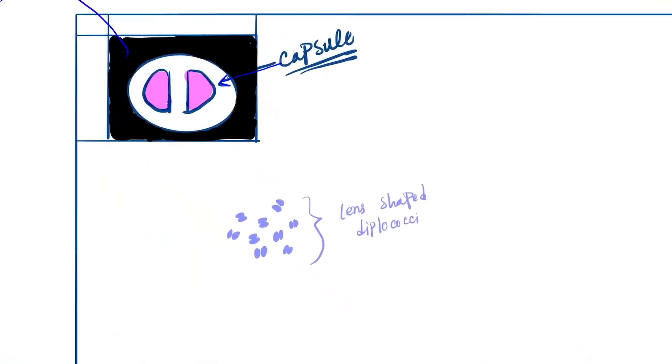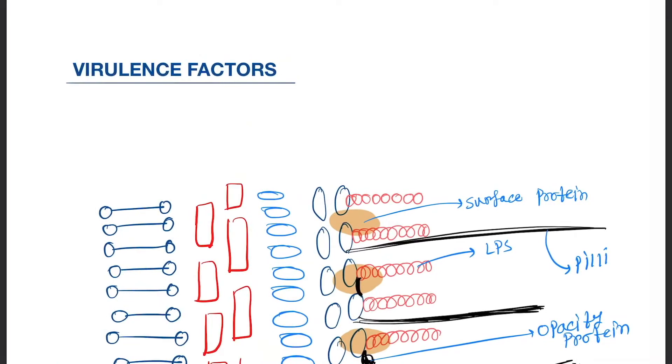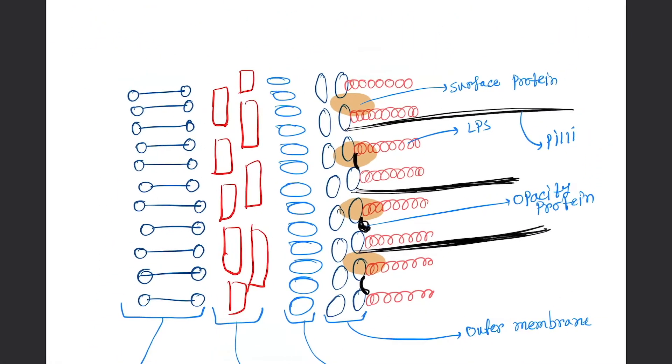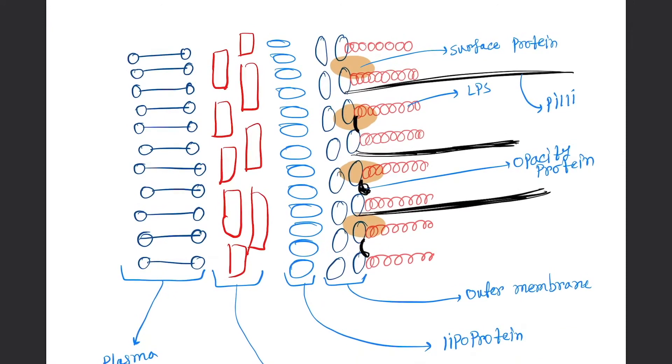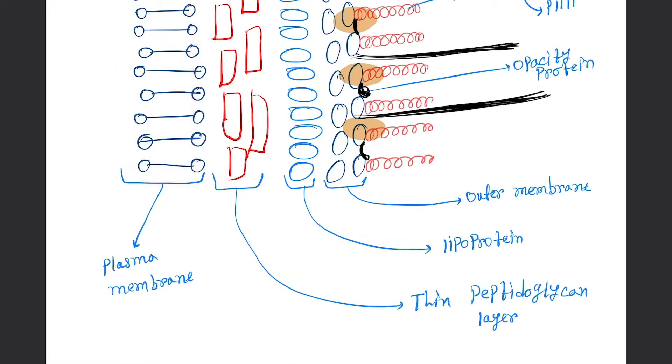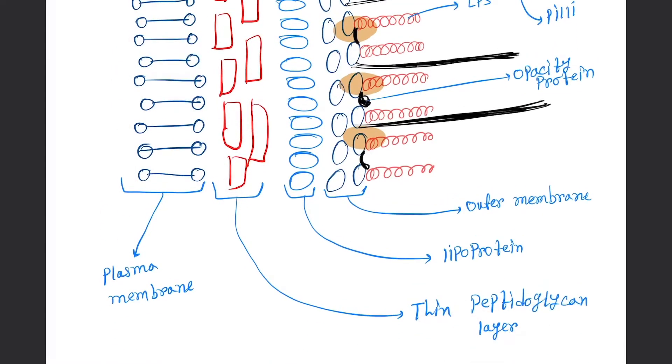Now learn the virulence factors. Here you can see the cell wall of gram-negative Neisseria. First is the plasma membrane, this layer is plasma membrane. Next, this layer is thin peptidoglycan. In gram-positive bacteria they are thick.